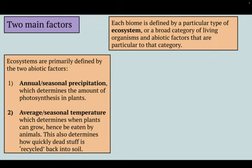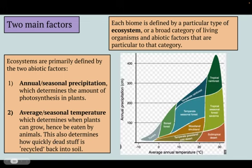Secondly is average or seasonal temperature. This is really important because water freezes at 32 degrees Fahrenheit, and if temperatures are significantly cooler than that, you're not going to have any plant growth. Also, if we're thinking about soil formation or dead stuff being broken down, you need adequate temperature for nutrient cycling. Based on those two factors, we can create a climograph where different ecosystems are defined based on high and low precipitation and temperature ranges.